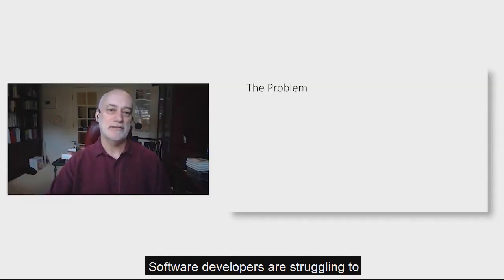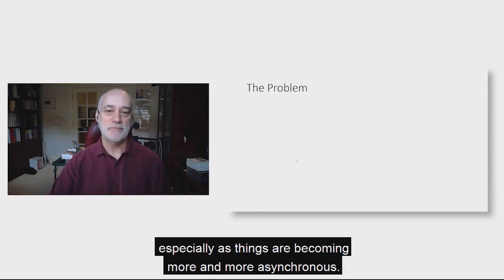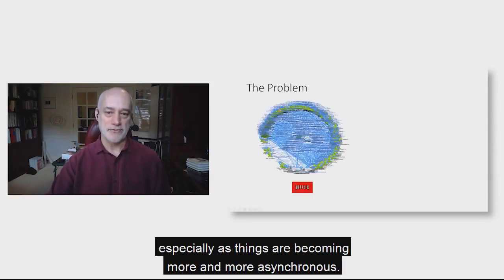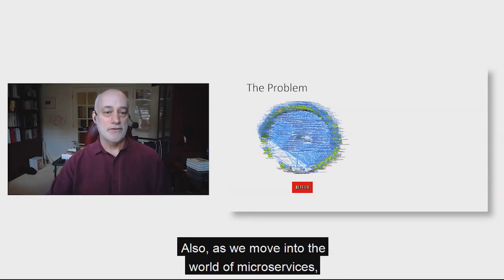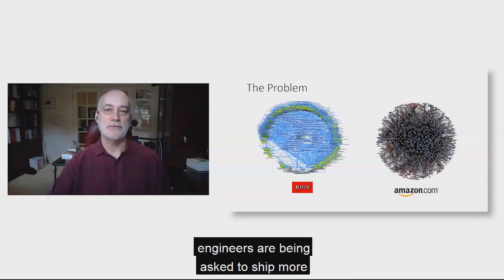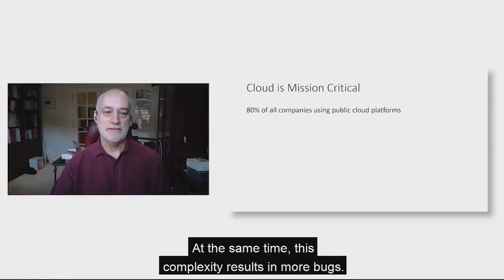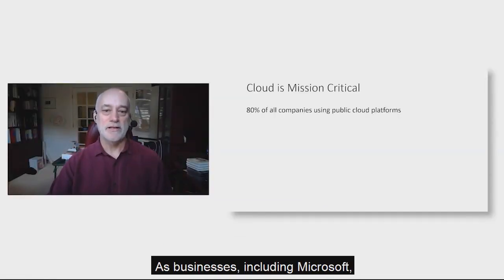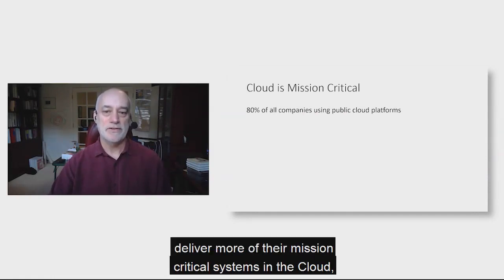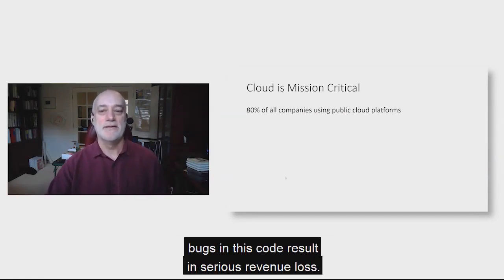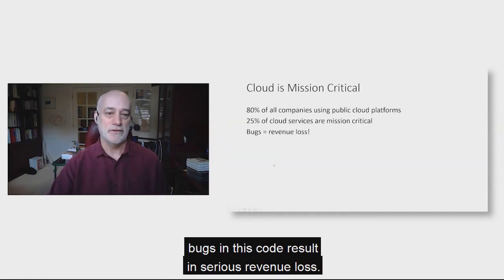Software developers are struggling to manage the complexity of their code, especially as things are becoming more and more asynchronous. As we move into the world of microservices, engineers are being asked to ship more frequently in a world that is more and more distributed. At the same time, this complexity results in more bugs, and as businesses including Microsoft deliver more of their mission critical systems in the cloud, bugs in this code result in serious revenue loss.